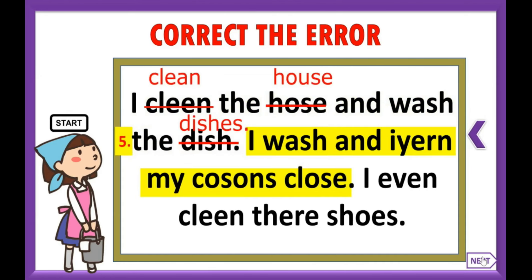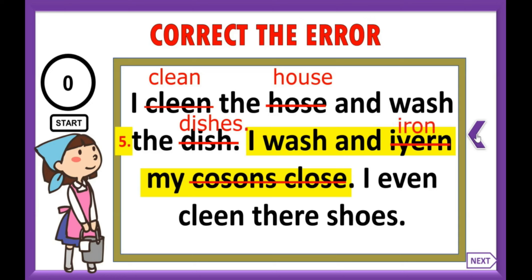Let's move on to sentence number five: 'I wash and iron my cousin's clothes.' There are three errors. 'Iron' is I-R-O-N. Remember, some words in English you just have to know how they are spelled. 'Cousin' should be C-O-U-S-I-N-S, and 'clothes' should be C-L-O-T-H-E-S.